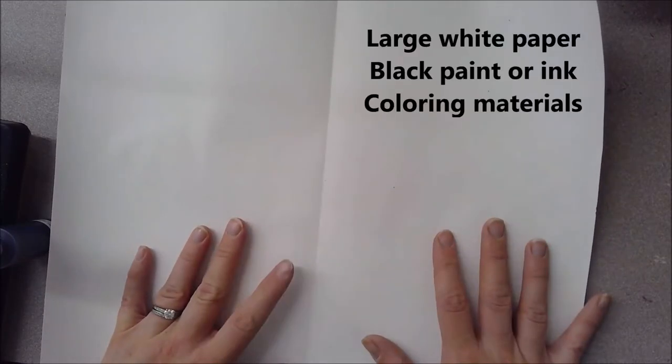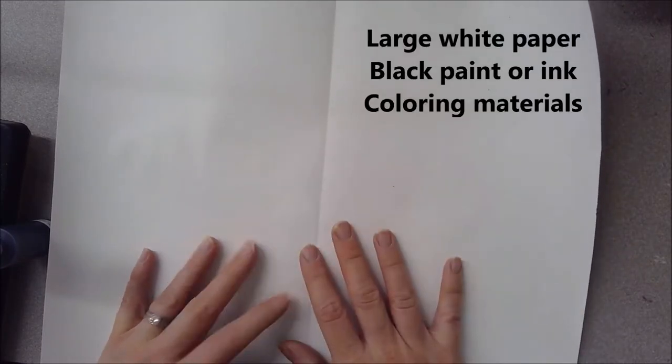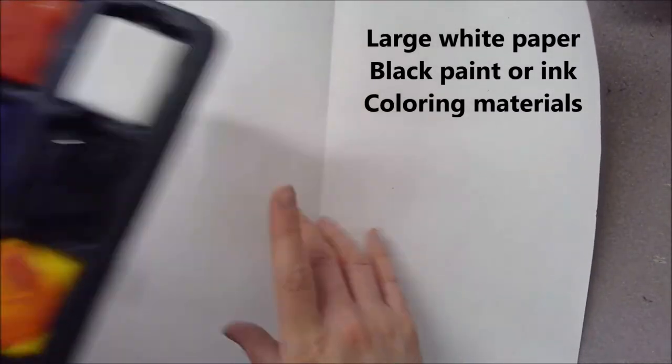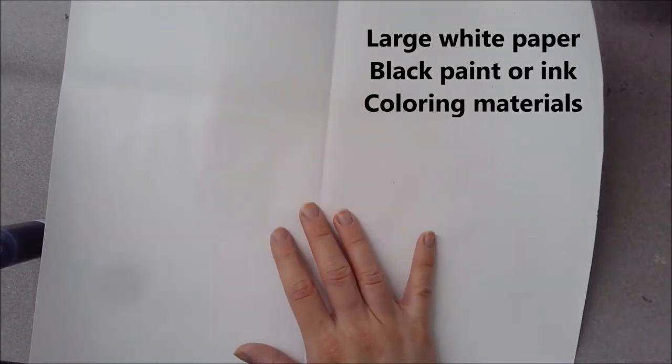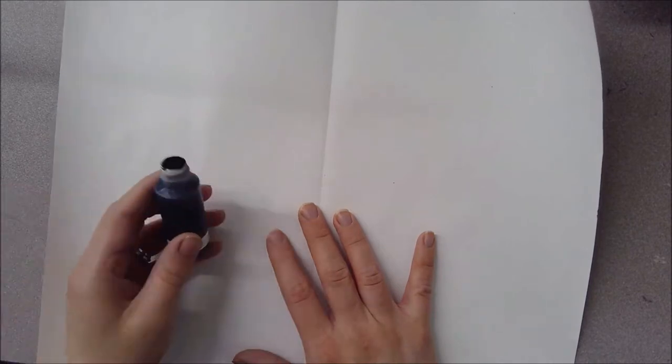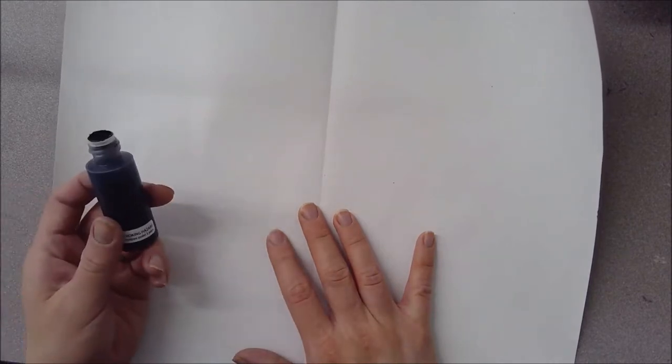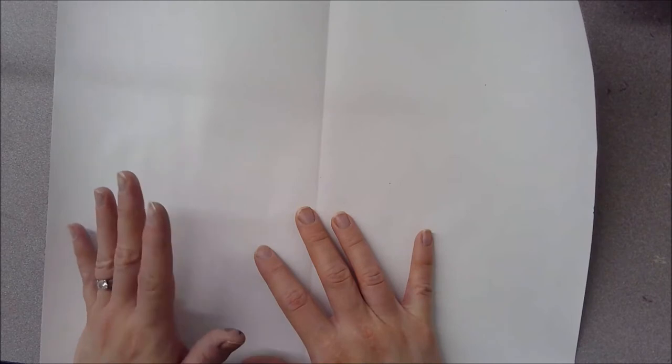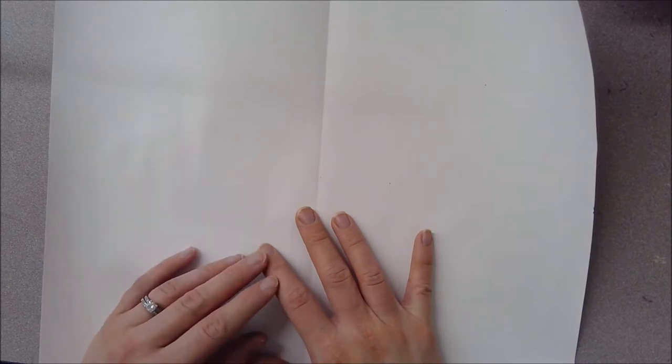For this project you're going to want a large white piece of paper or something that is thick and can be painted on. You're going to want black paint - you can use tempera paint or acrylic paint. You could also use a bingo dauber filled with ink, which is what I'm going to use. You are also going to want some sort of coloring material whether it's watercolor, chalk or crayons, colored pencils, something that we can color a butterfly in with later.